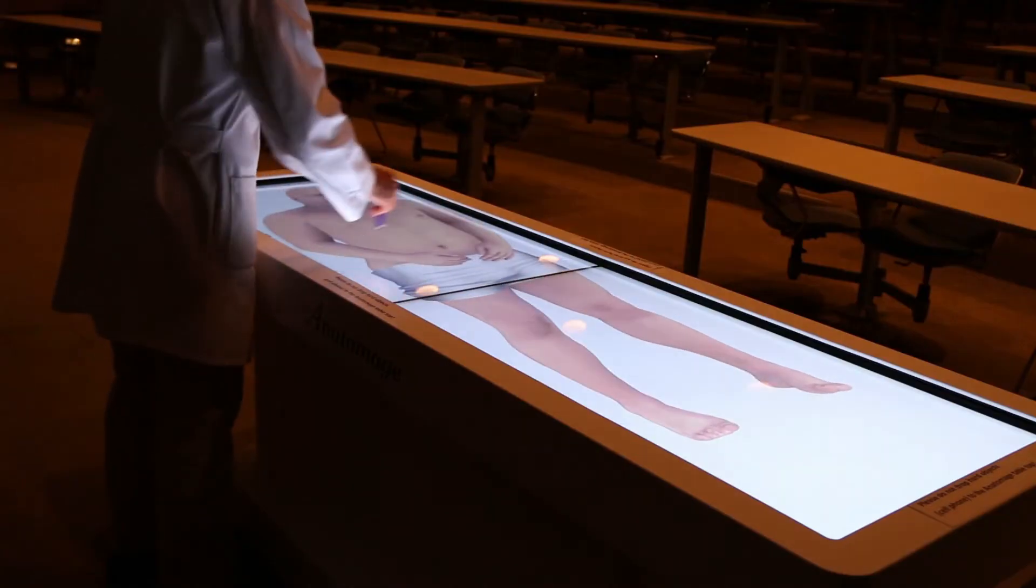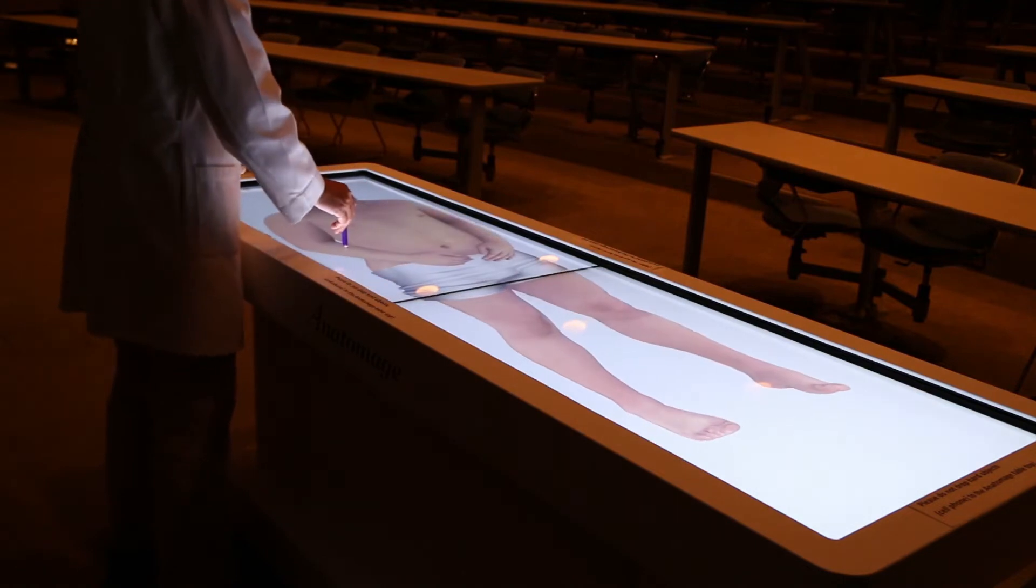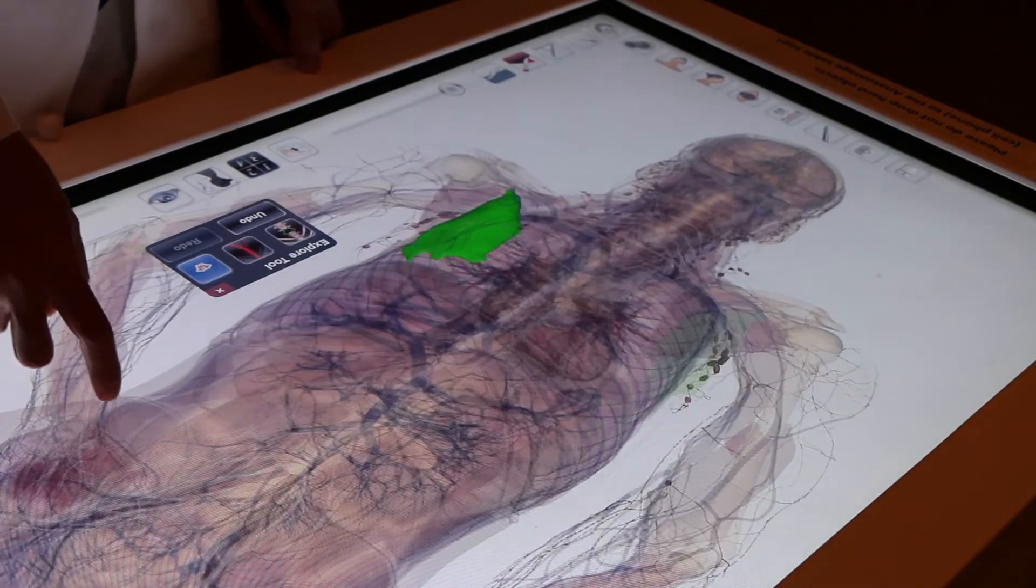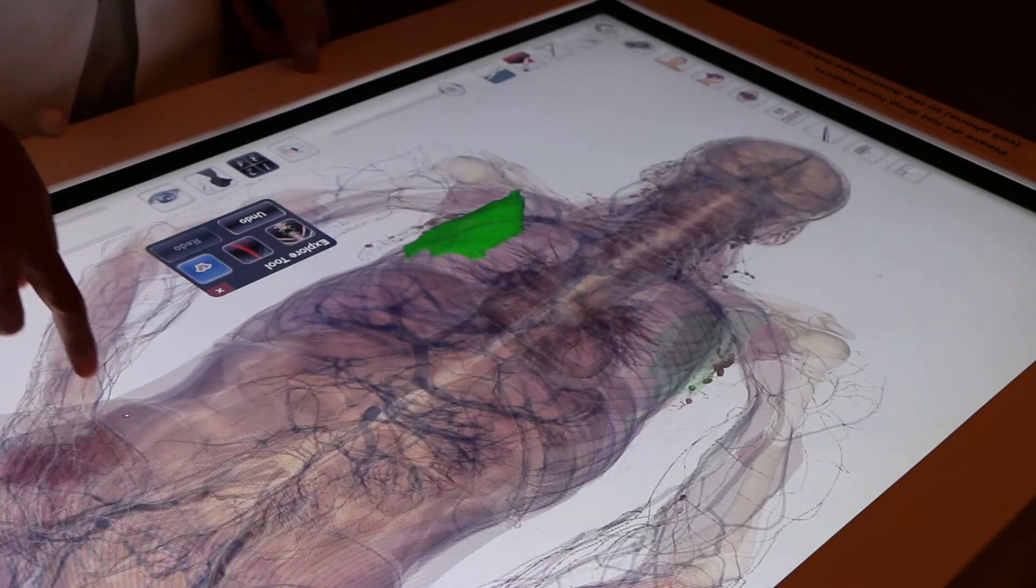Before we had the table, to rotate an image and illustrate the three-dimensional structure or relationship of a particular structure, we had to use many frames of static pictures to illustrate the concept. It's not as effective as just one second rotation of a 3D image.